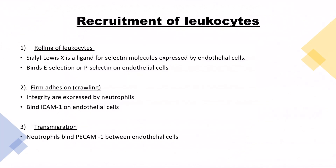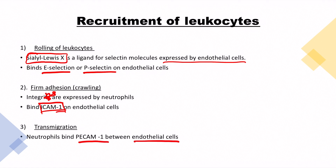Let's review the text. The first step is rolling — sialyl Lewis X is a ligand for selectin molecules expressed by endothelial cells; it binds E-selectin or P-selectin. Second is firm adhesion or crawling: integrins expressed by neutrophils bind ICAM-1 on endothelial cells — very important to remember. Transmigration involves neutrophils binding PECAM-1 between endothelial cells. In summary: sialyl Lewis X binds E/P-selectin; integrins bind ICAM-1; PECAM-1 mediates transmigration.